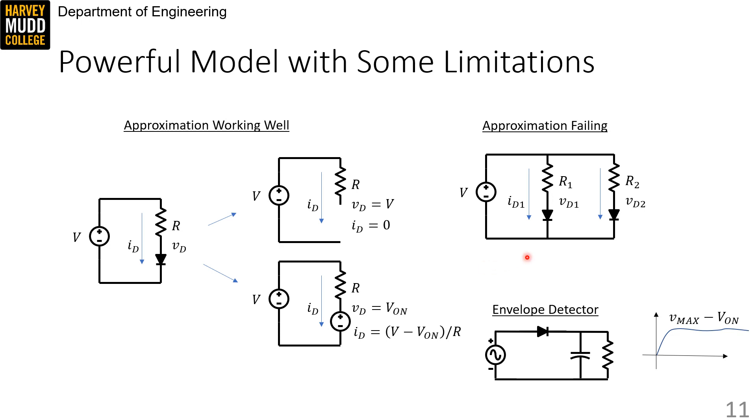The upper right of the slide shows a situation where this approximation works poorly. If you care about the difference in voltage across two different diodes, or slight changes in the value of VD, then this approximation won't tell you anything interesting.